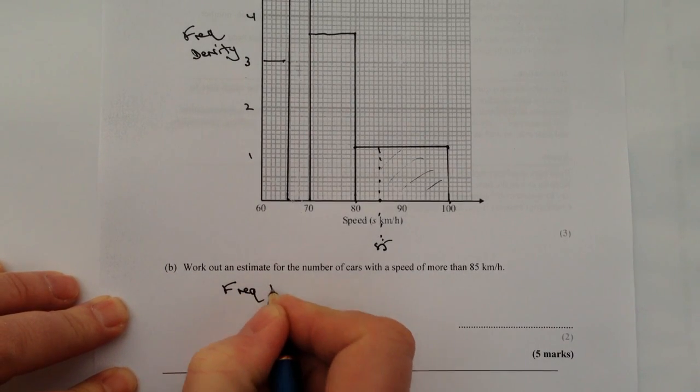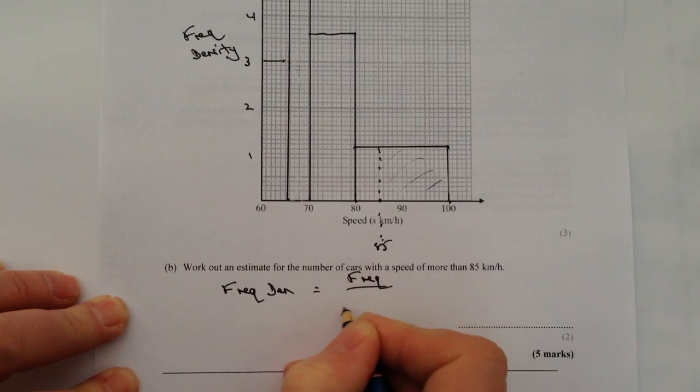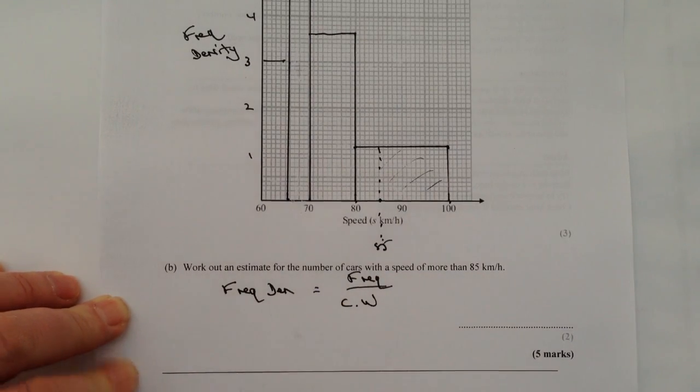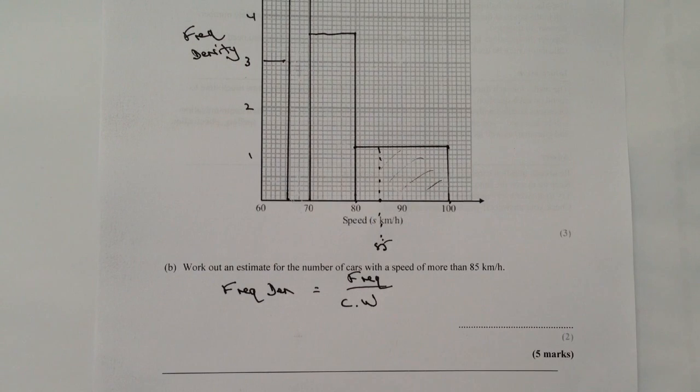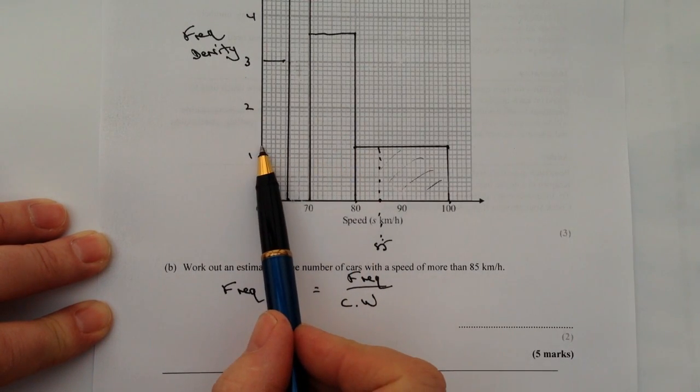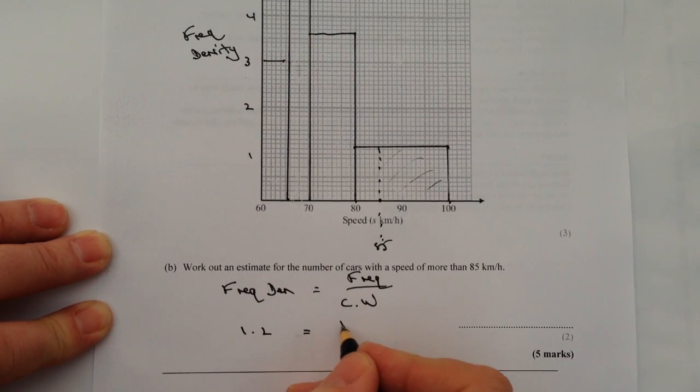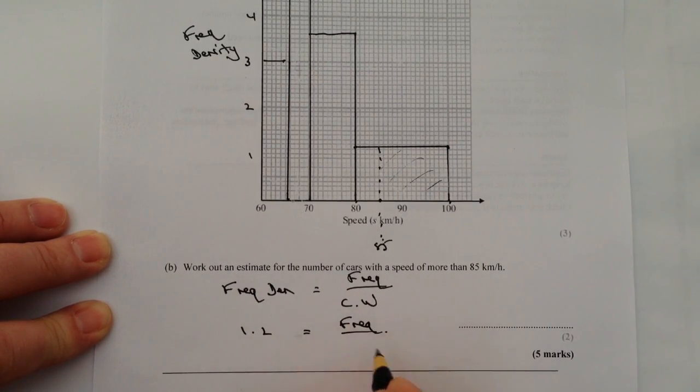So again if I use exactly the same formula, I've got frequency density equals frequency divided by class width. And I can read off the information because the number of cars, well that's actually going to be the frequency. It's the amount of cars that are doing more than 85 kilometers per hour. So the frequency density I can take from this information here which I've plotted, and that's going to be 1.2.